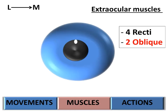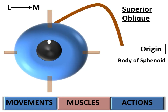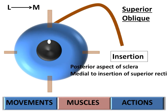The two oblique muscles are superior and inferior. The superior oblique originates from the body of the sphenoid along the medial wall of the orbit. It passes along a trochlea and gets inserted into the posterior aspect of the sclera just medial to the insertion of the superior rectus.